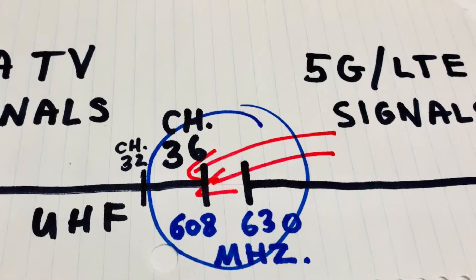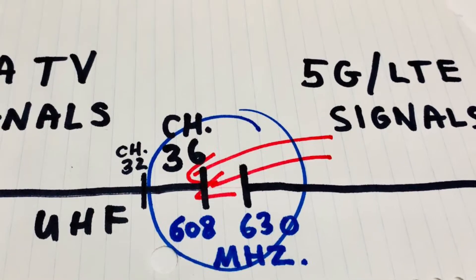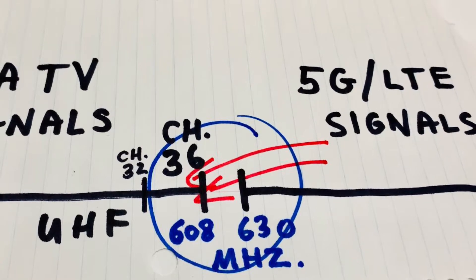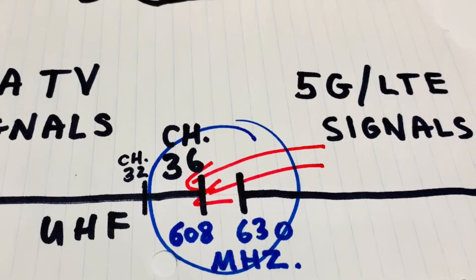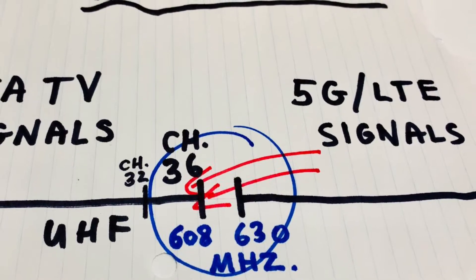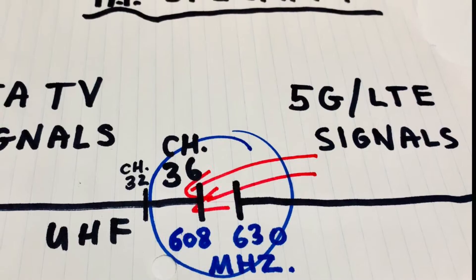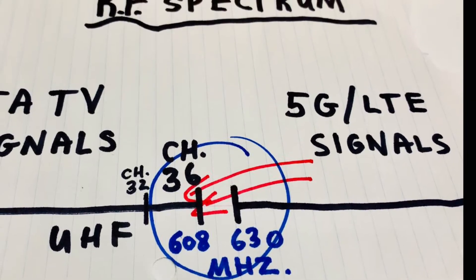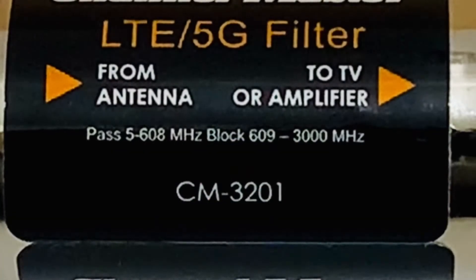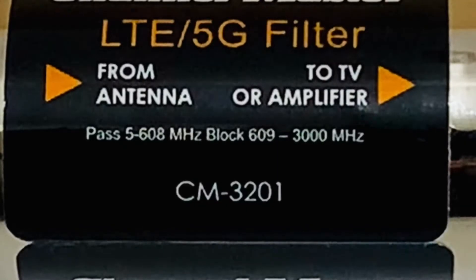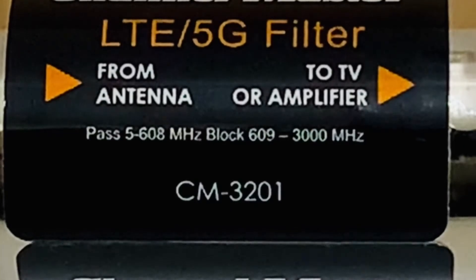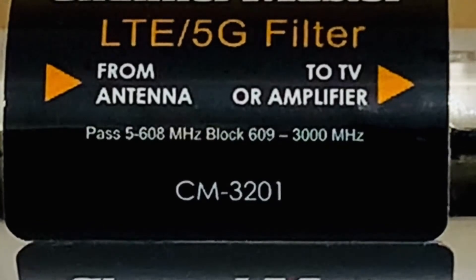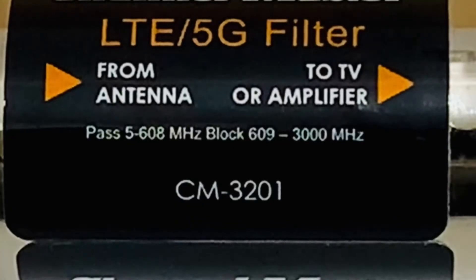Noise and interference from 4G, 5G, or LTE cell phone signals often presents itself as a regular pattern of spotted pixelation, especially on UHF TV channels 32 through 36, since those channels are the closest on the TV spectrum to 4G, 5G, and LTE cell phone signals. This filter has a pass band from 5 to 608 megahertz, which is plenty of room for all of your over-the-air TV signals to pass through. The block band starts at 609 megahertz all the way up to 3,000, which should take care of any 5G, LTE, or 4G cell phone signals causing problems.